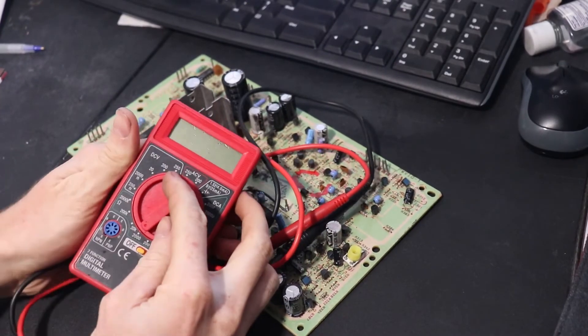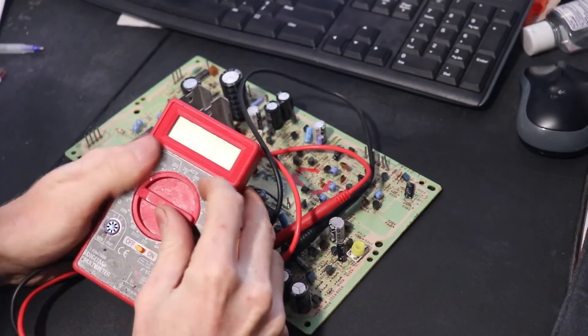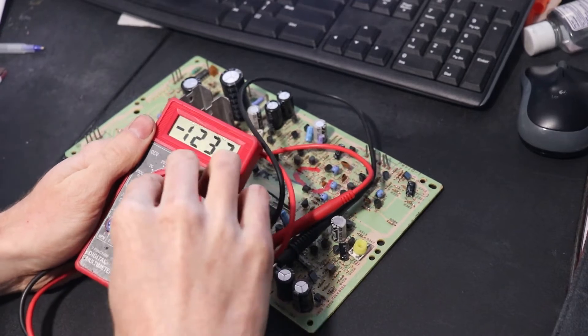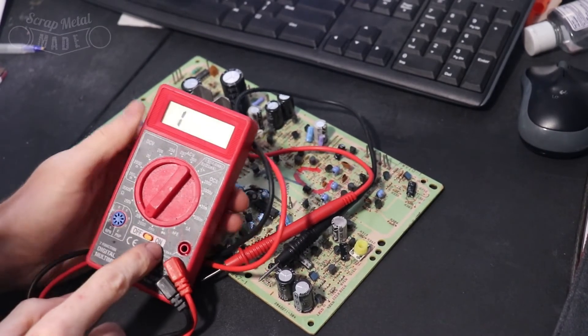Alright, so what do these settings do? I didn't see a good video out there that showed the different resistor settings.